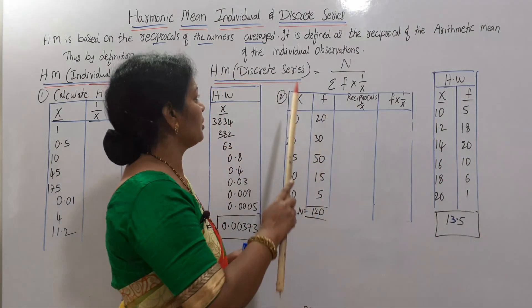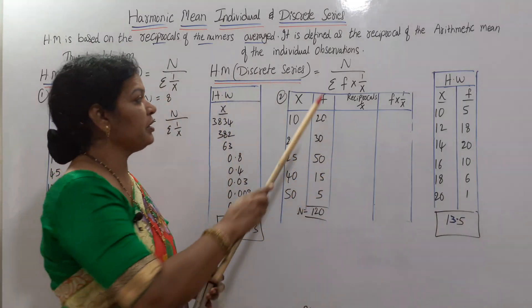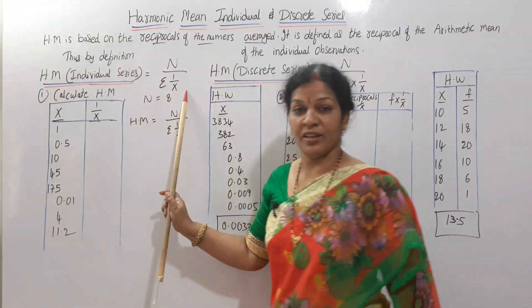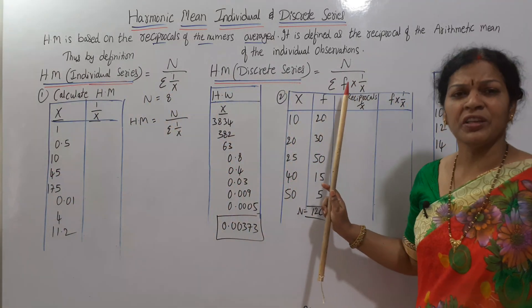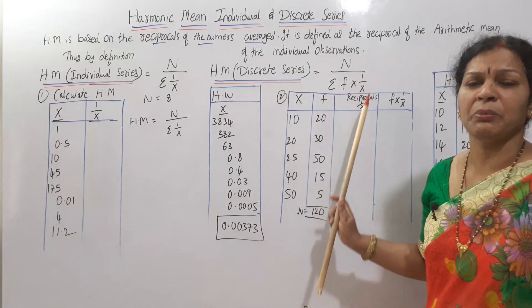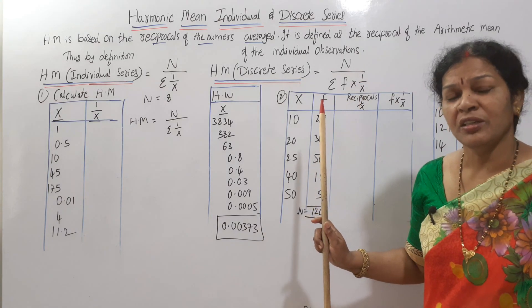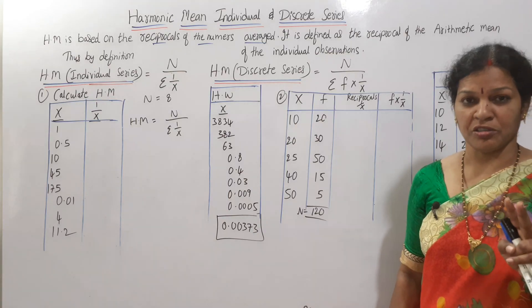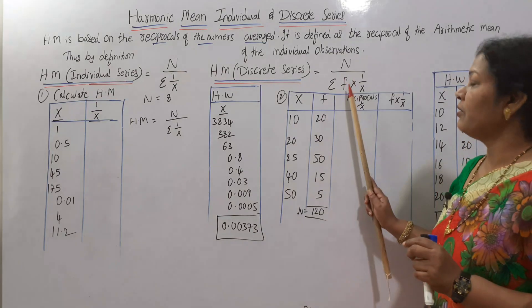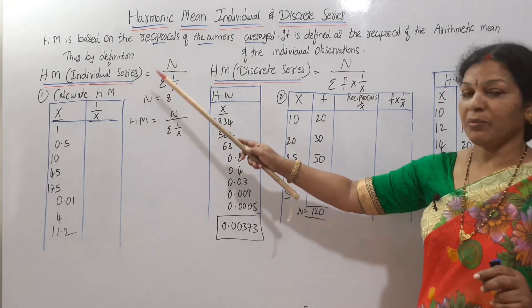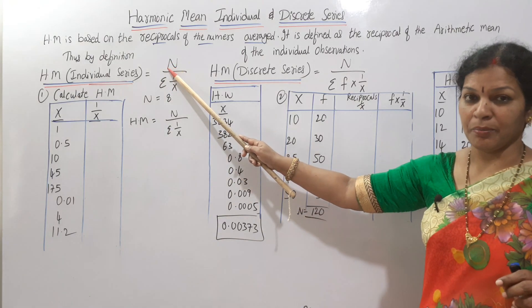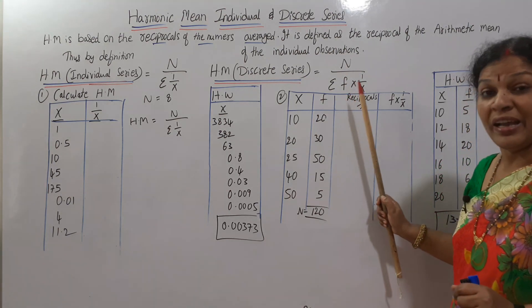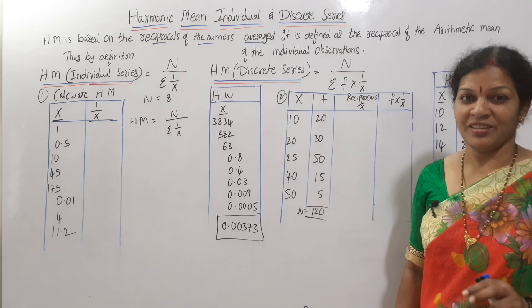For the discrete series, the formula is n by sigma f into (1 by x). Here f is the frequency. So for discrete and continuous series, we have frequency into 1 by x. The formula for the individual series is n by sigma (1 by x), and for discrete series it is n by sigma f into (1 by x).